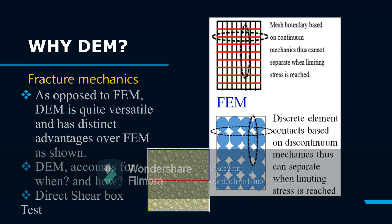Why DEM in fracture mechanics as opposed to FEM? DEM is versatile and has distinct advantages over FEM. The mesh boundary in FEM is based on continuum mechanics, so even when the limiting stresses are reached, the mesh cannot separate — you cannot see a fracture.